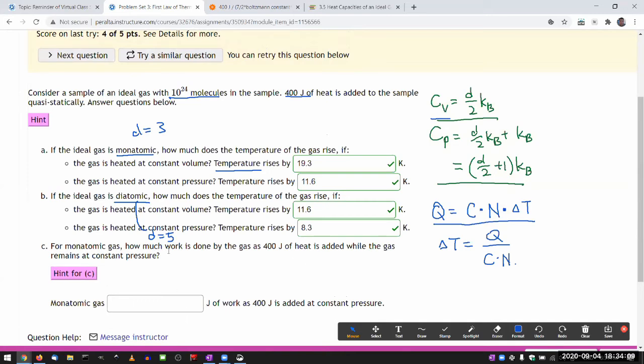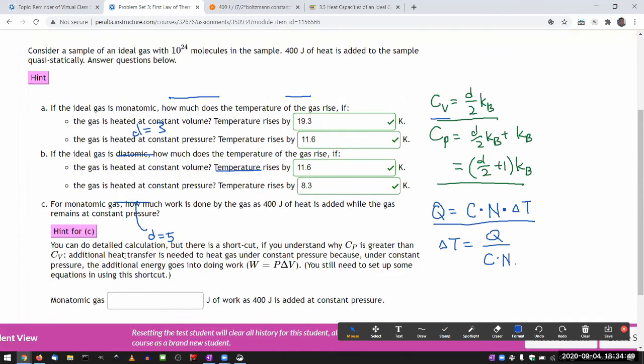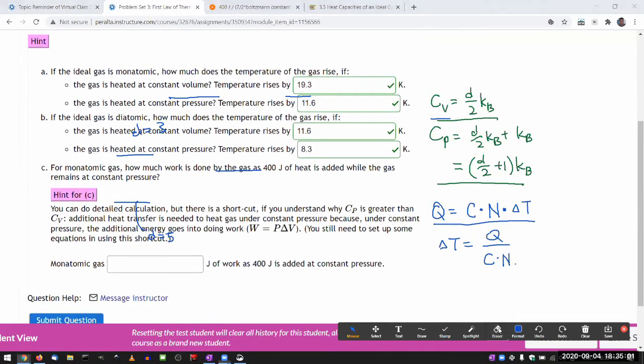For monatomic gas, how much work is done by the gas? There's a hint. What I'm guessing the hint will point to is you look at the change of internal energy associated with these changes in temperature, and the amount by which the internal energy of the constant pressure process changed less is the work being done.